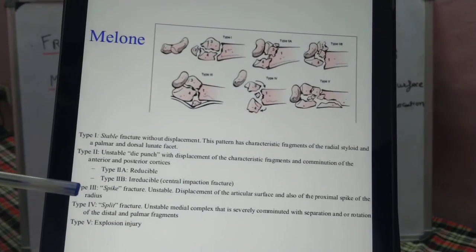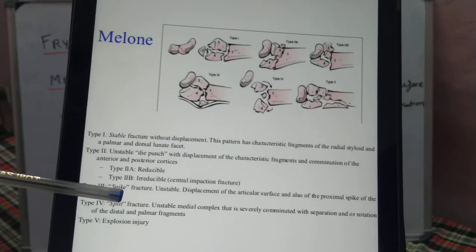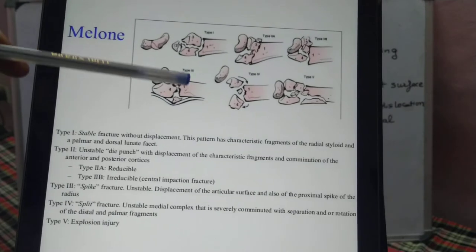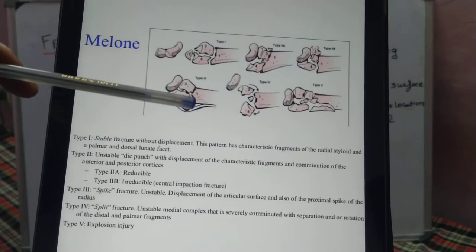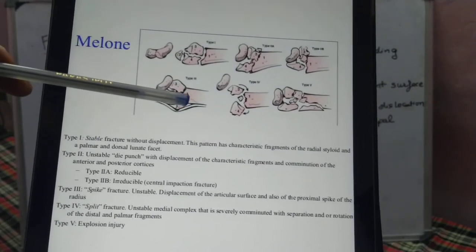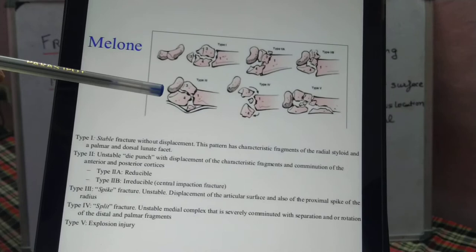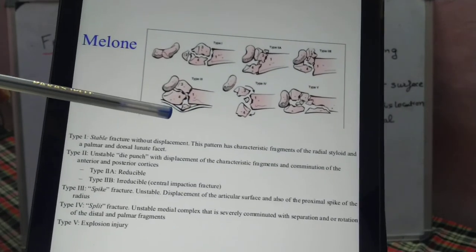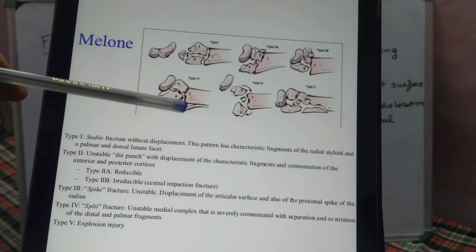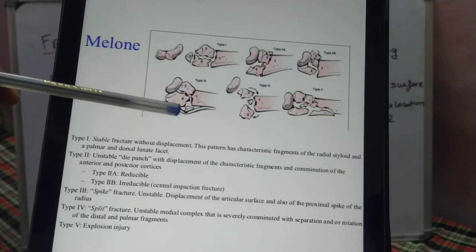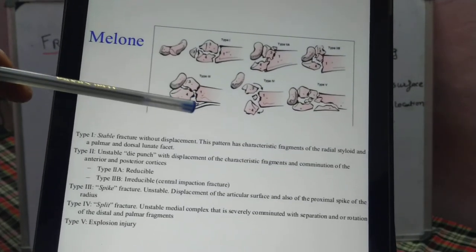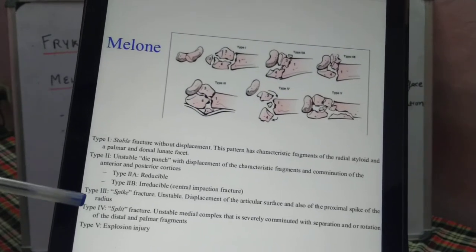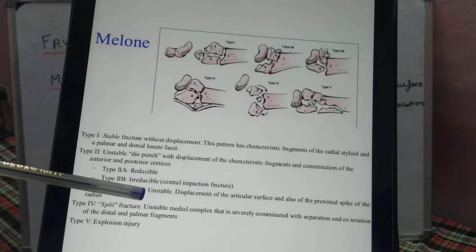Type 3 is the spike type of fracture. It is an unstable injury where a spike is created on the volar aspect. This spike is known to cause injury to the median nerve and the flexor tendons.